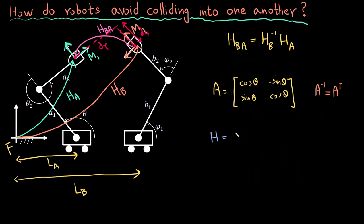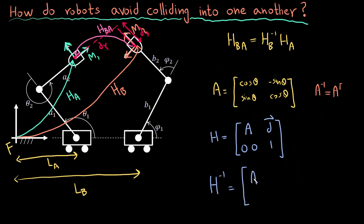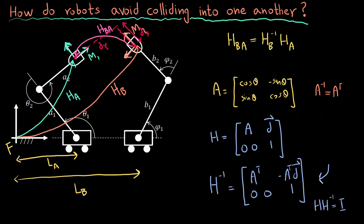What about the homogeneous transform? The homogeneous transform has a rotation matrix, two zeros, a displacement term d, and a one. Its inverse is of the form: A transpose, zero zero, minus A transpose times d, and one. You can verify this using the equation H times H inverse equals the identity matrix. You don't strictly need to know this, but it's useful to have in case you get stuck.